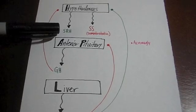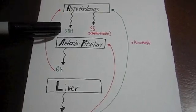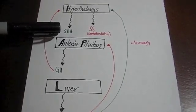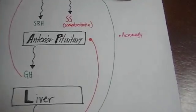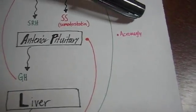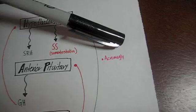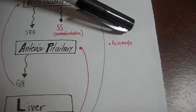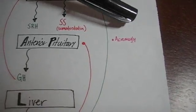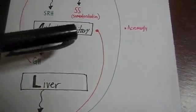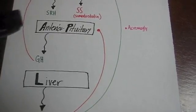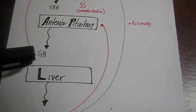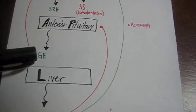The condition related to excess growth hormone is called acromegaly. This is a benign tumor on the pituitary gland, which will produce an excess amount of growth hormone.